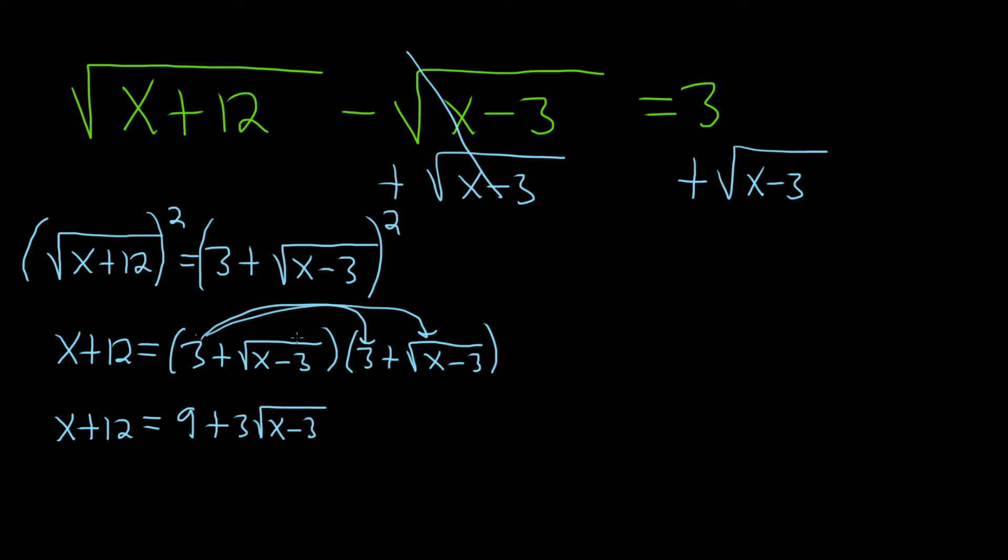Then we continue with the inner and last terms. Inner gives us another 3 times the square root of x minus 3. For the last, when you multiply square root of x minus 3 times itself, the square root goes away, so you just get x minus 3.